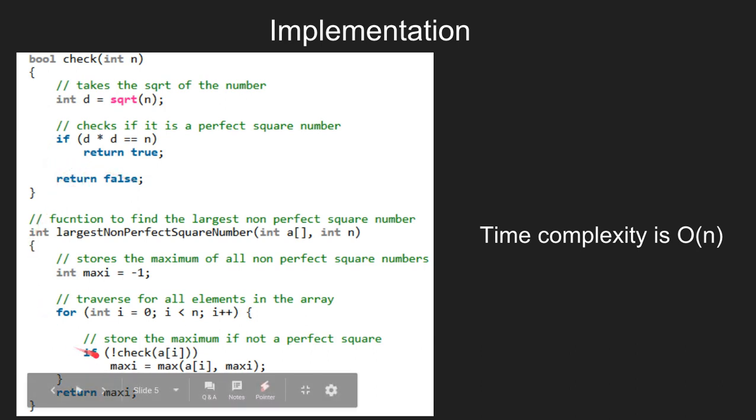After the if condition, we check for the maximum element, which is then updated after every check function is called for every element. Then finally we return the max_i element, which is the maximum of the non-perfect squares. Otherwise, we return minus one if there is no number which is not a perfect square.